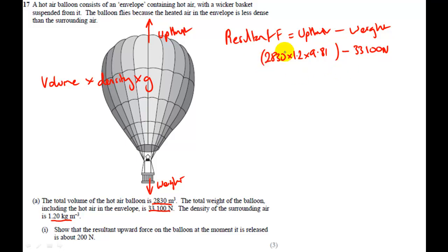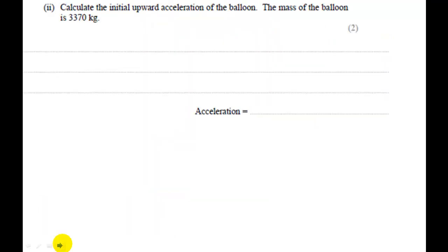I find do this bit first and then subtract 3 3 1 0 0 newtons from it so you don't make a mistake with a BODMAS error, and we find that comes to 2 1 4 point 7 6 Newtons. I'm just going to round it up to 2 1 5 Newtons and that's my answer and that is about 2 0 0 Newtons so I'm quite happy that that's correct.